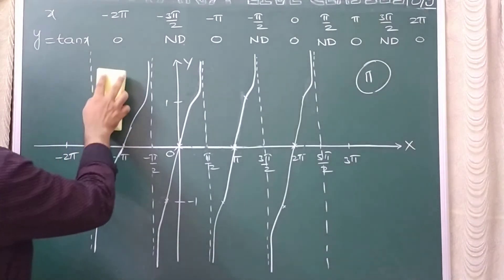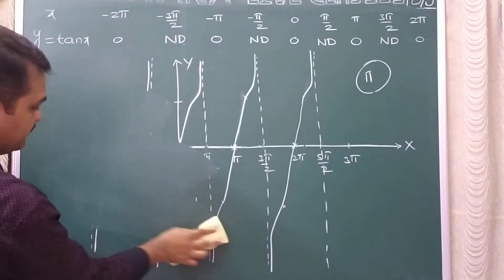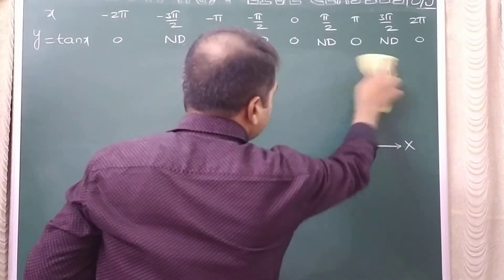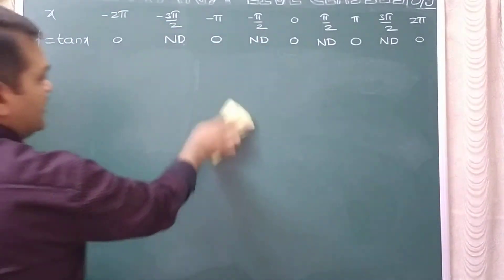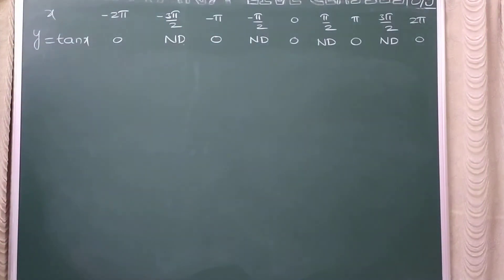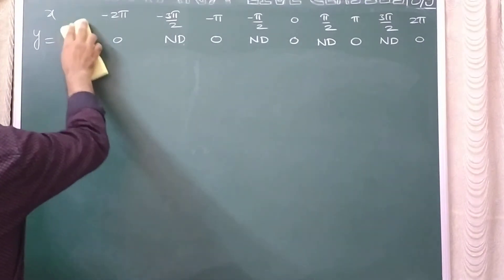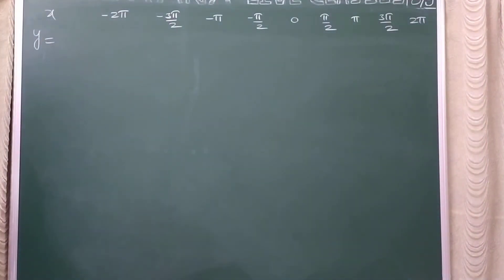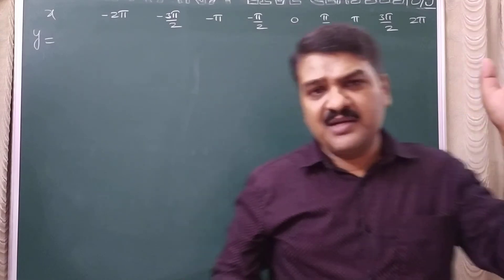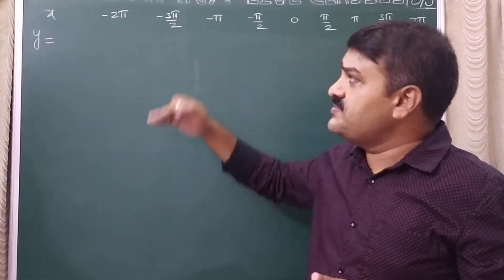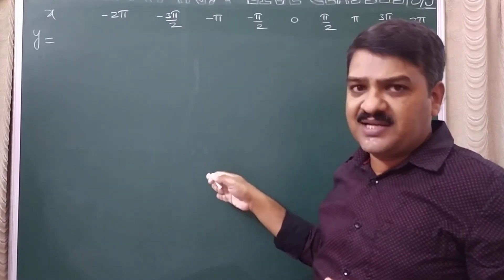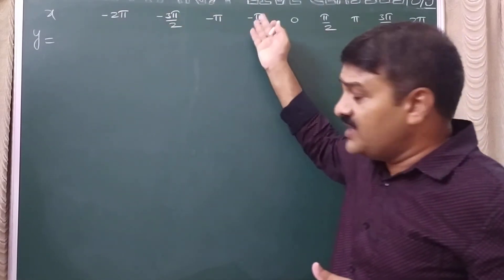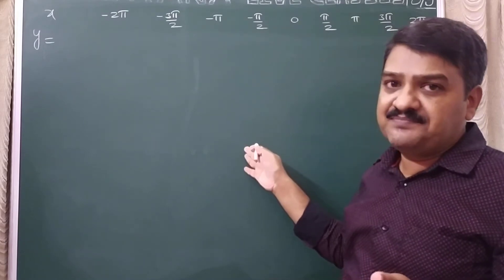Now let us consider the graph of cot x. The graph of cot x is actually similar - tan x graph is increasing between any two dotted lines, whereas the cot x graph will be decreasing between any two dotted lines. We take values of y for some selected x values; you can also locate additional points for convenience to get the shape of the graph perfectly.